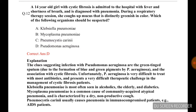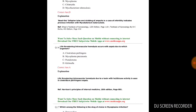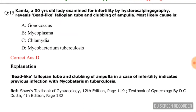Next question: a 14-year-old girl with cystic fibrosis is admitted with fever and shortness of breath, diagnosed with pneumonia. During respiratory therapy she coughs up mucus that is distinctly greenish in color. Options are Legionella pneumonia, mycoplasma pneumonia, Pneumocystis carinii, Pseudomonas aeruginosa. The correct answer is option D — Pseudomonas aeruginosa.